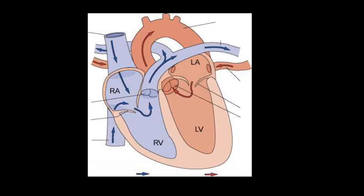For the deoxygenated blood: it enters the heart through the superior vena cava and the inferior vena cava — the largest vein in the body. This brings the deoxygenated blood into the right atrium, which then enters the right ventricle past the tricuspid valve. From the ventricle, it enters the pulmonary artery passing the semilunar valve.